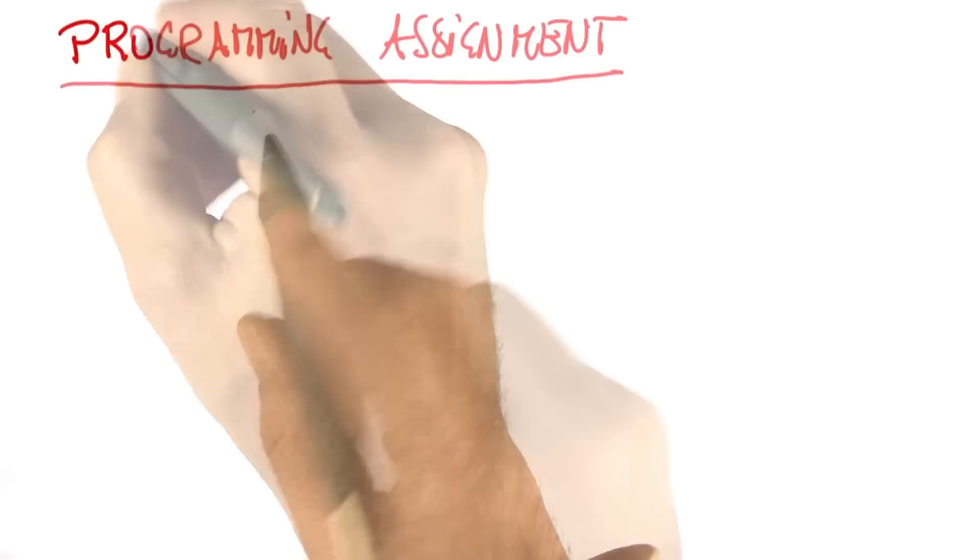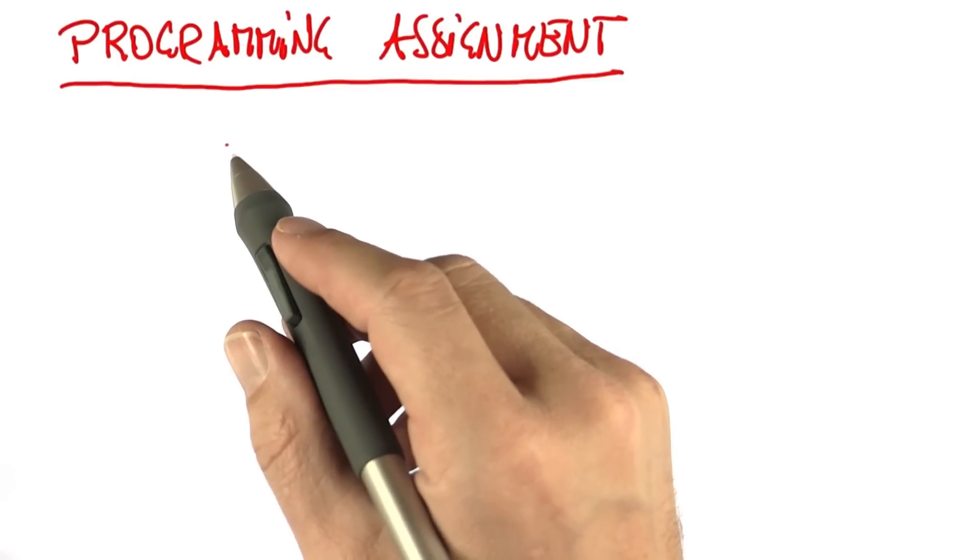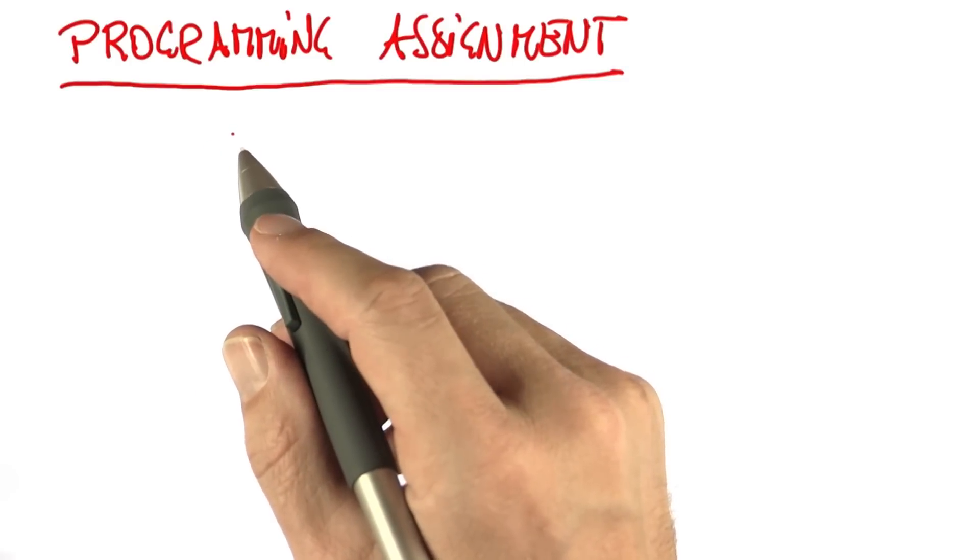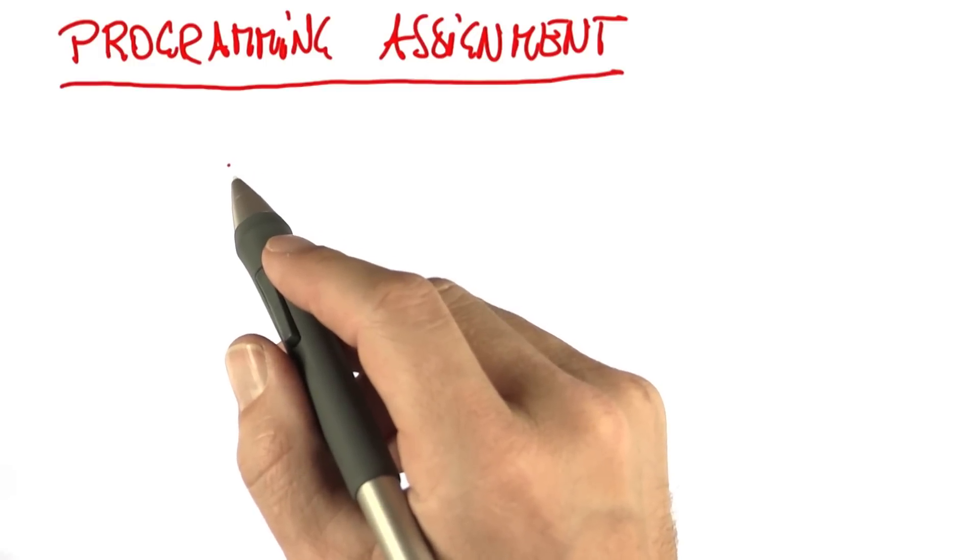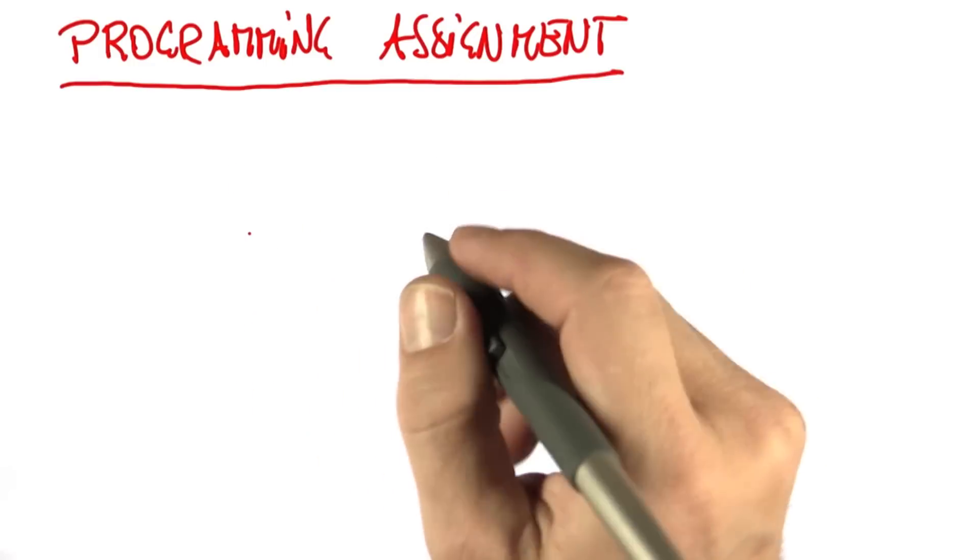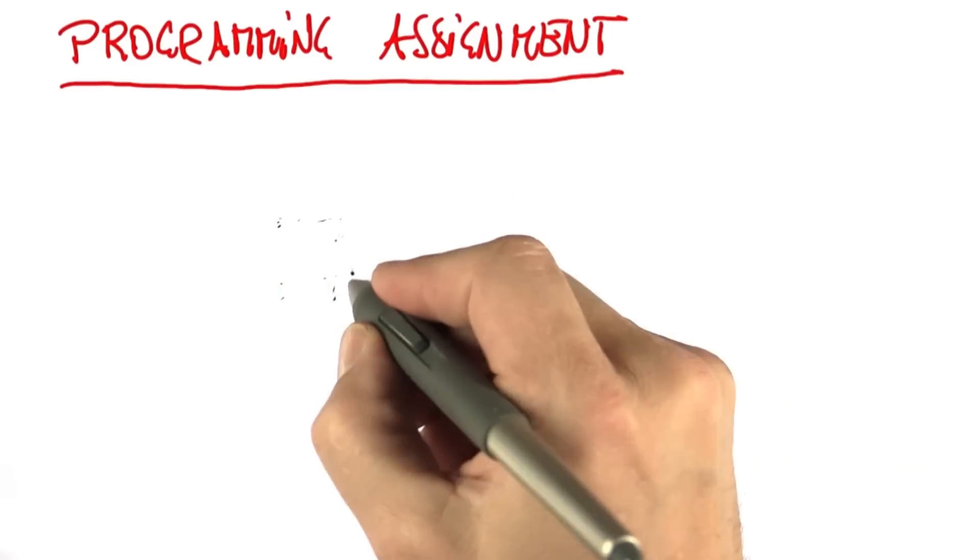So here's our programming assignment. In class, you already programmed a particle filter for a really simplistic robot that was able to measure ranges to landmarks and moved pretty much like a trash bin. Now I'd like to replace it with a more interesting robot that is more realistic. In particular, I'd like you to use a car.